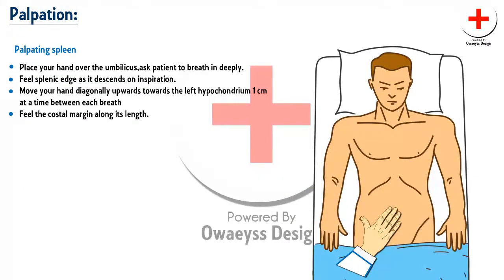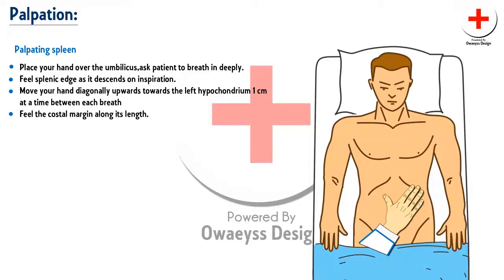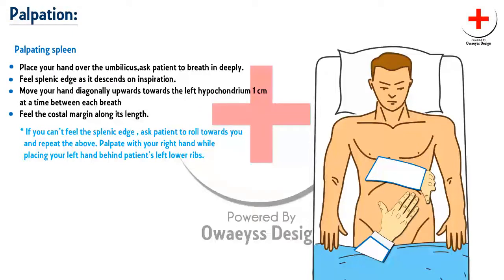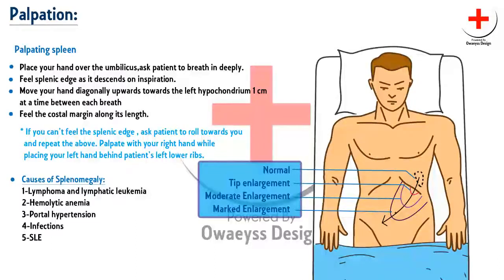While palpating the spleen, place your hand over the umbilicus. Ask the patient to breathe in deeply. Feel the splenic edge as it descends on inspiration. Move your hand diagonally upwards towards the left hypochondrium one centimetre at a time between each breath. Feel the costal margin along its length. If you cannot feel the splenic edge, ask the patient to roll towards you and repeat the above, palpating with your right hand while placing your left hand behind the patient's left lower ribs. Causes of splenomegaly include lymphoma, lymphatic leukaemia, haemolytic anaemia, portal hypertension, and infections including glandular fever, malaria, tuberculosis, and SLE.